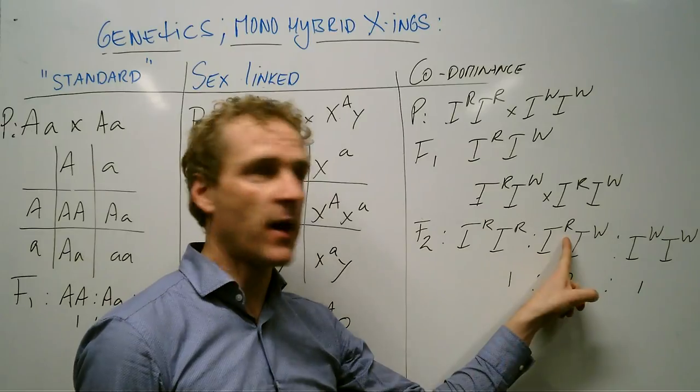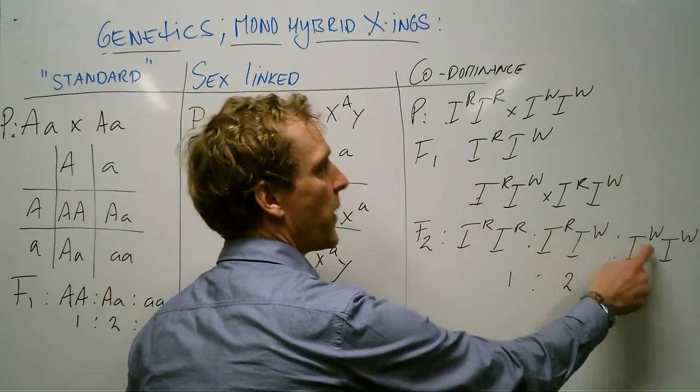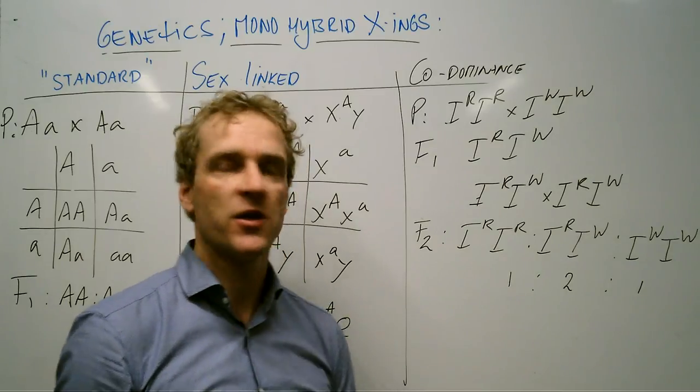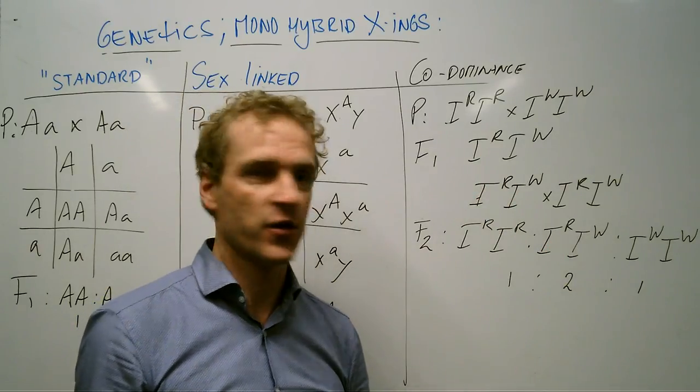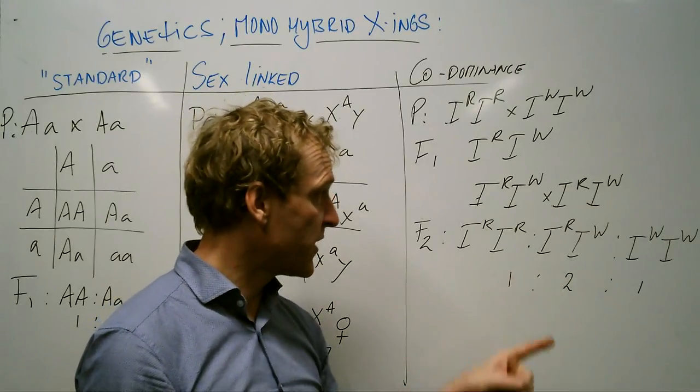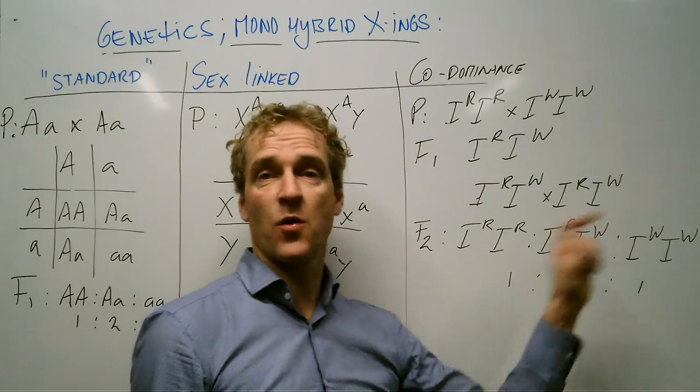If you make a Punnett square of this we see a red plant coming to existence in the second generation, we see also pink plants and we see a white one. So we can see the two plants that we have in our parent generation and we can also see the pink one that we came up with in our first generation. We have a different ratio though, we have one red plant to two pink ones to one white one.